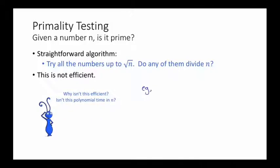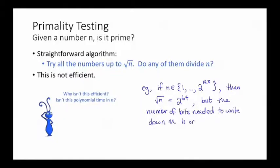So for example, if we were to choose n, a 128-bit number, so n between 1 and 2^128, then the square root of n is equal to 2^64, which is still an extremely large number. So checking all 2^64 numbers between 1 and √n is going to be prohibitively expensive. On the other hand, the number of bits needed to write down n is only 128. So perhaps we could get an algorithm that runs in time polynomial in 128 rather than 2^64. Really what we're after here is an algorithm that runs in time poly log n rather than polynomial in n.